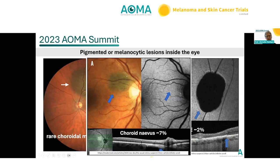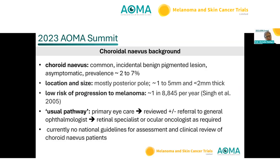This talk is going to be more about these early lesions — choroidal nevi — that are a fairly common melanocytic lesion seen inside patients' eyes, often by primary care optometrists. Choroidal nevi are actually fairly common, usually an incidental finding, a benign pigmented tumour, usually asymptomatic, with a prevalence of about two to seven percent, with some ethnicity variations.